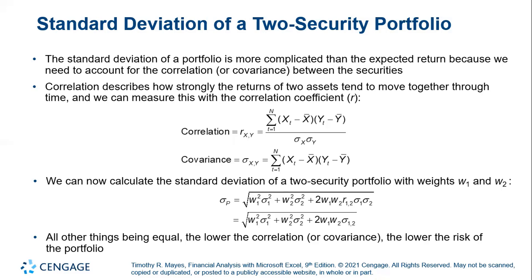Correlation describes how strongly the returns of two assets tend to move together through time, and we can measure this with the correlation coefficient. Once we have the correlation or covariance, we can calculate the standard deviation of a two-security portfolio with weights W1 and W2. All else being equal, the lower the correlation or covariance, the lower the risk of the portfolio.